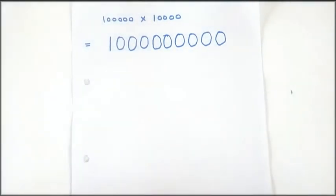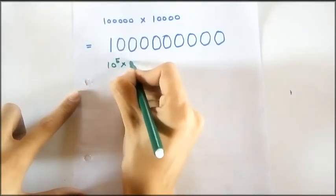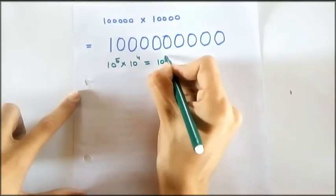We can also write it as 10 raised to the power 5 multiplied by 10 raised to the power 4 is equal to 10 raised to the power 9.